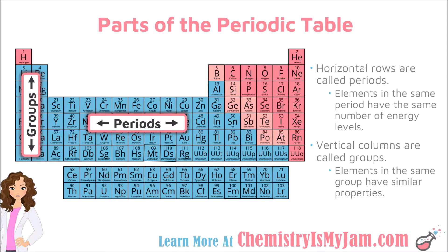The periodic table is so much more than just a list of elements. We can use the location of an element on the table to indicate the properties of the element, to tell us what other elements it might react with. There's just a lot of information dealing with the arrangement of the periodic table that is so useful to a chemist.